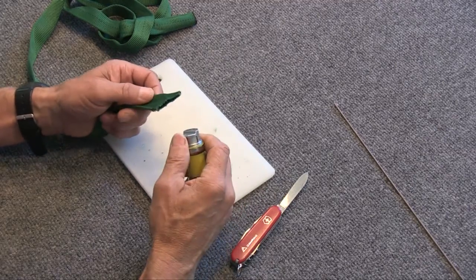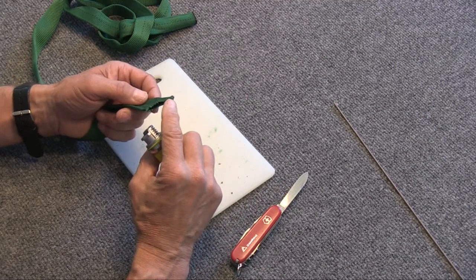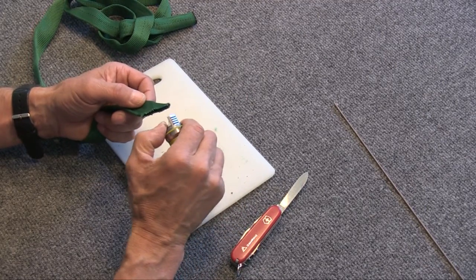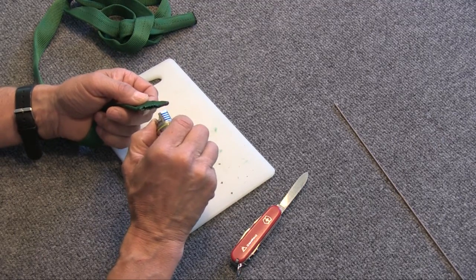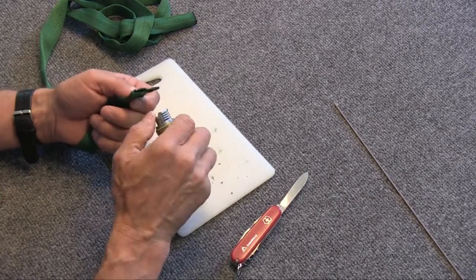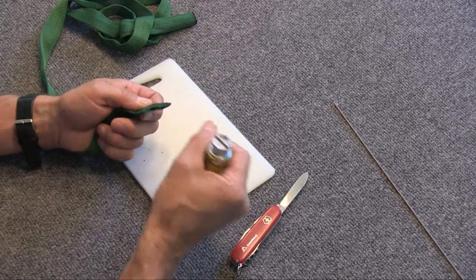Then you're going to take your cigarette lighter or a match and just melt the tip of this so that you create a little pocket right in the very end of that 45 degree angle. Just melt that enough so that it seals that together right there at the end.